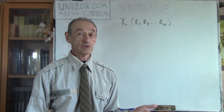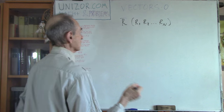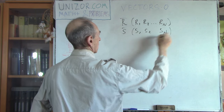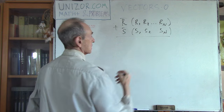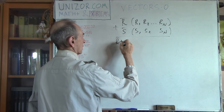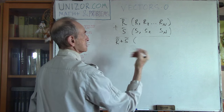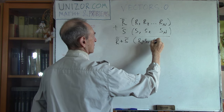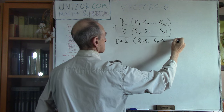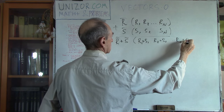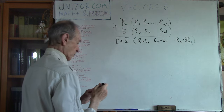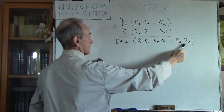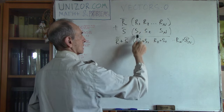If you have two n-dimensional vectors of the same dimension, we can add them together and have a new vector where we sum component by component: r1 plus s1, r2 plus s2, etc., rn plus sn. So from one set of n numbers and another set of n numbers, we form a third set of n numbers where every number is the corresponding sum.